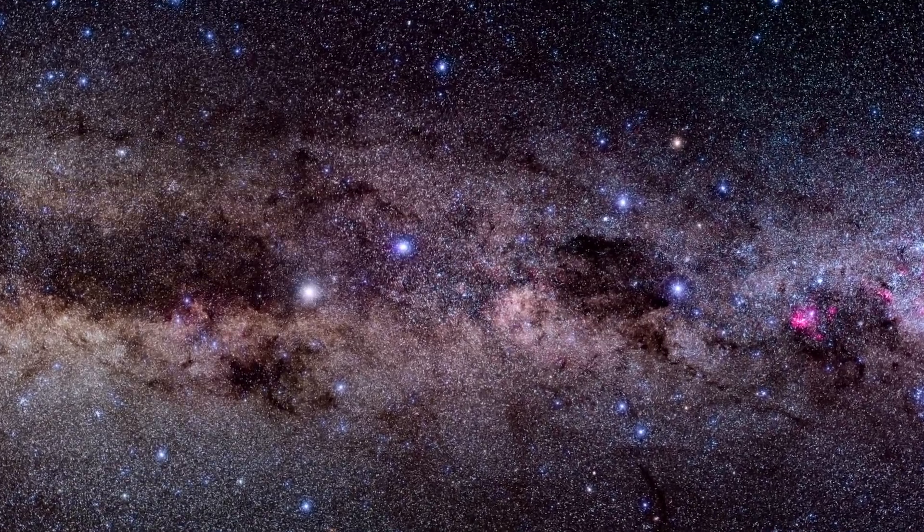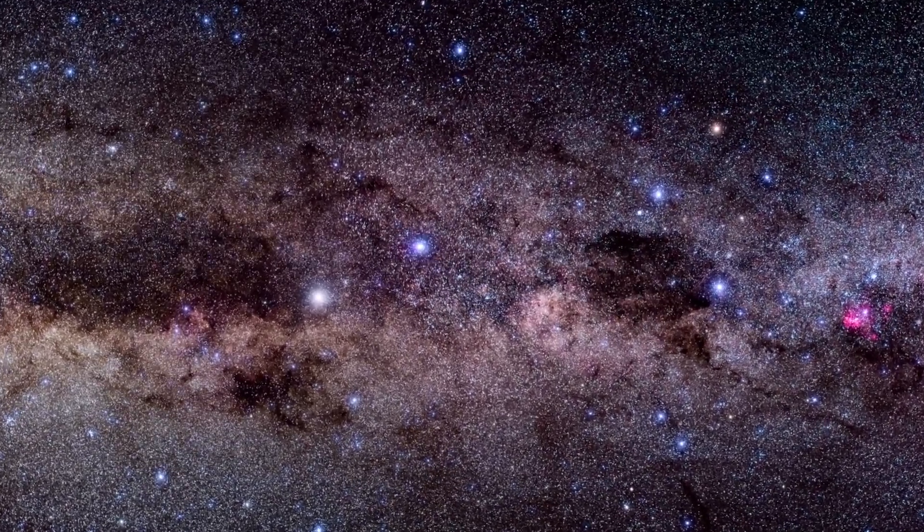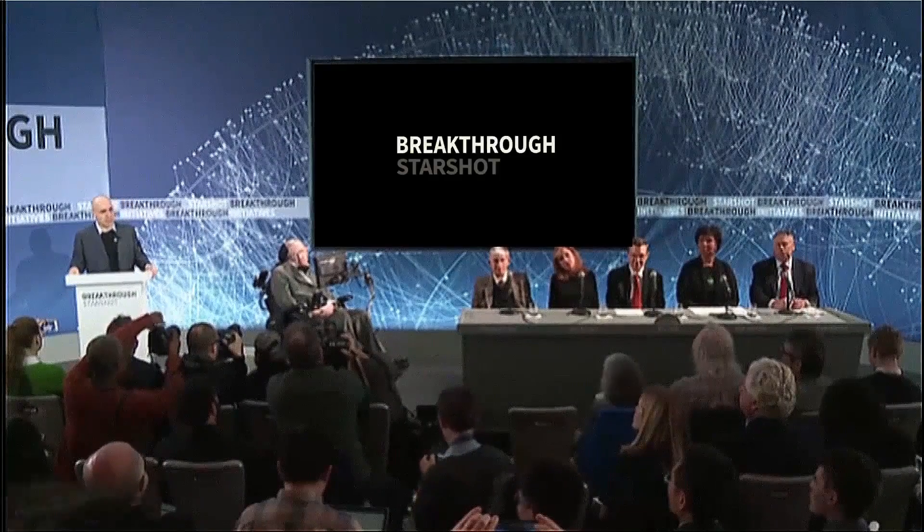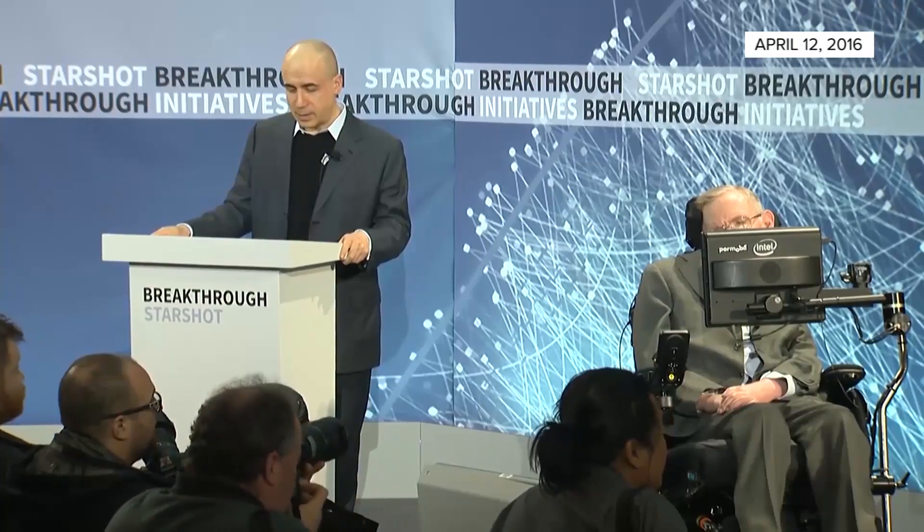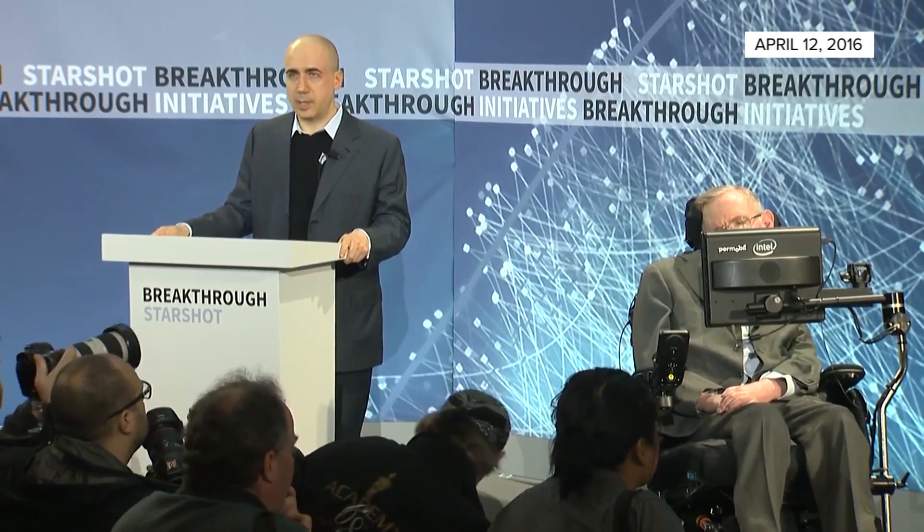The Alpha Centauri star system is four light years from Earth, our nearest galactic neighbor. A privately funded venture called Breakthrough Starshot has a plan to send human technology there in the next few decades.